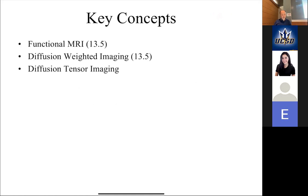So today we're going to finish up our discussion of functional MRI, and then we're going to talk about diffusion-weighted imaging and diffusion tensor imaging. That has really become a standard of MRI imaging over the last 20 years, and we want to make sure you understand what that's about.